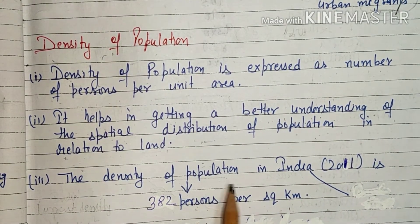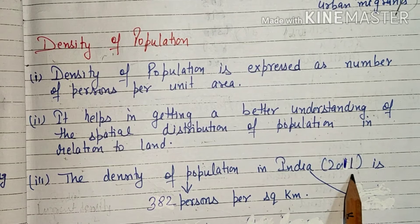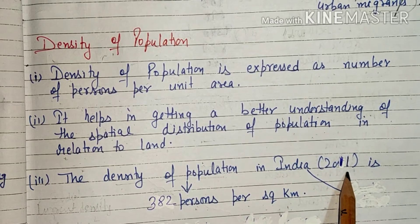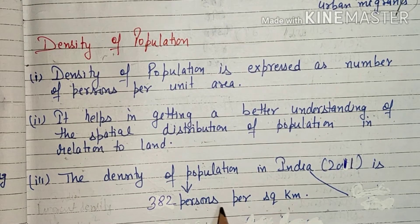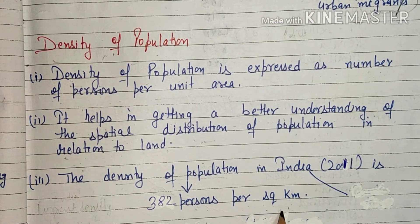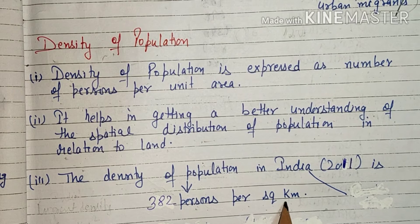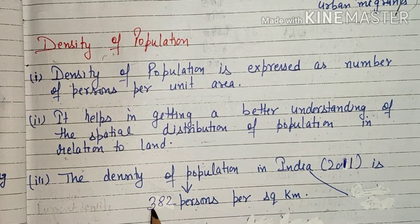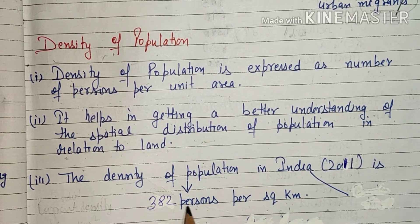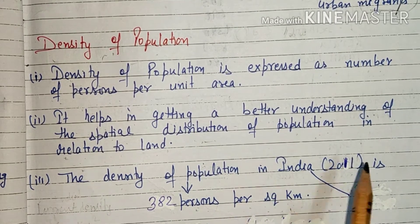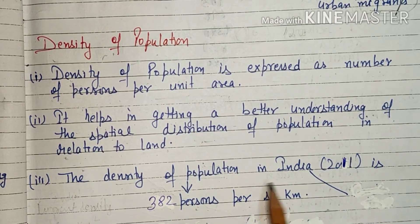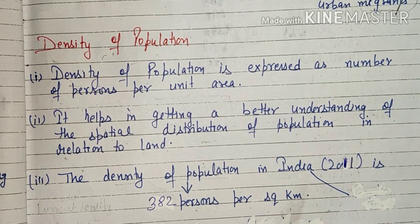Density of population in India in 2011, according to the census, is 382 persons per km². Meaning, in 1 km², 382 persons live in India as per the 2011 census. Clear?